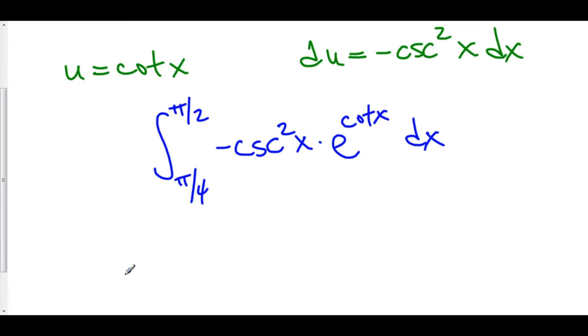So, now all I have to do is just replace everything in here. And I've got the integral, and I'm going to hold off on putting in my limits just for a moment and you'll see why in a second. I've got my e to the u, and negative cosecant squared x dx is du.